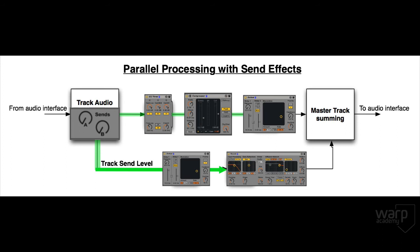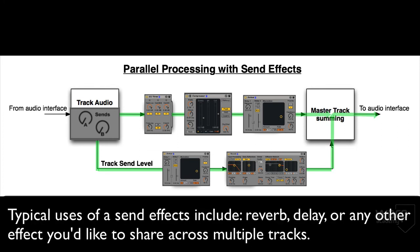Two versions of the track are being affected in two different ways at the same time. The original track and the return track's audio are eventually mixed together at the master track, where they are then output to your sound card and speakers and your ears. A typical use for a send effect would be placing a reverb or delay on a return track so that you could apply as much or as little of these effects to any track you choose using each track's send dial.